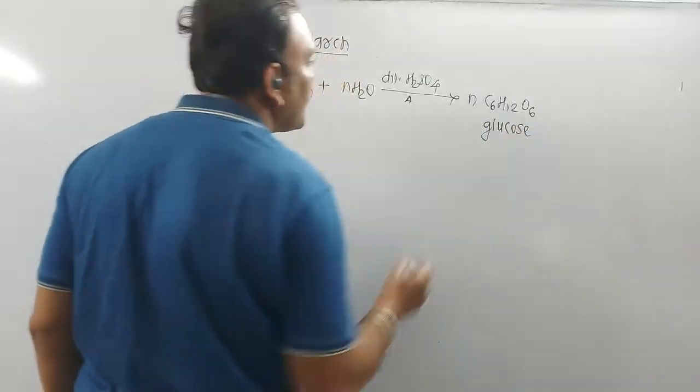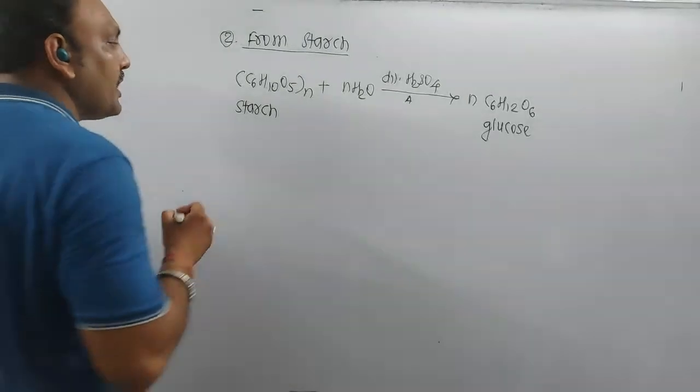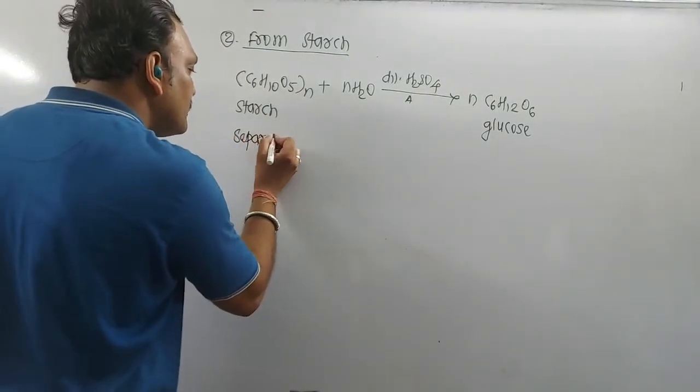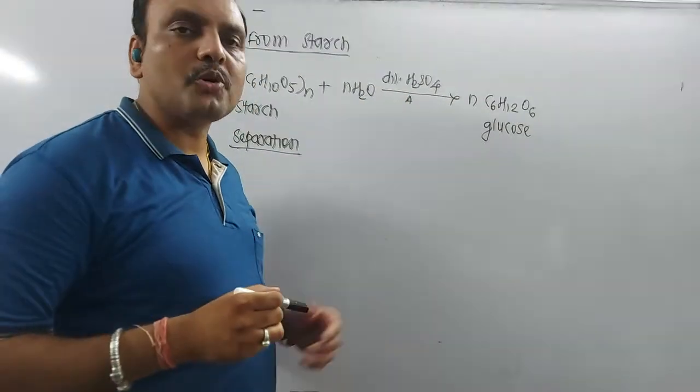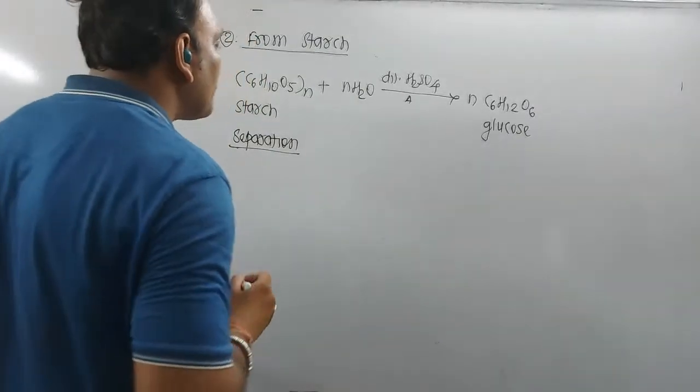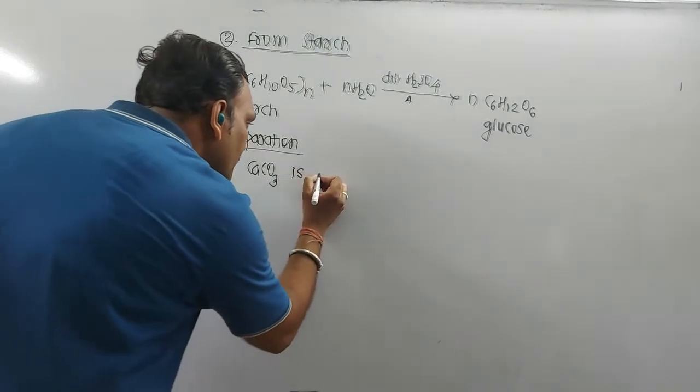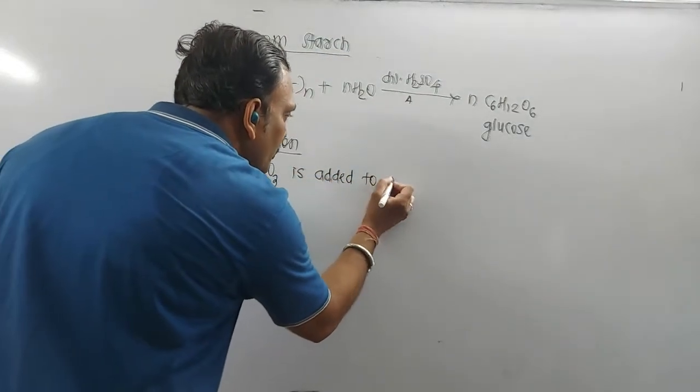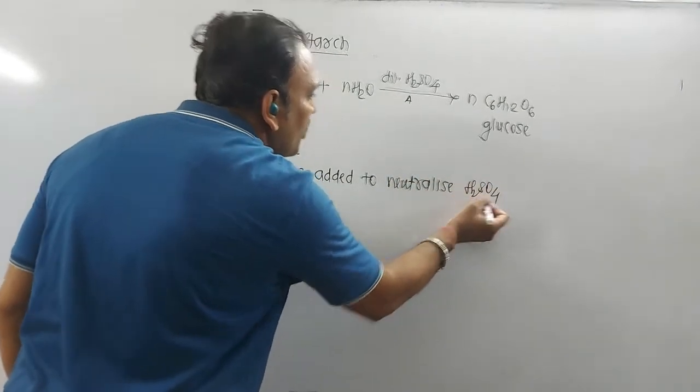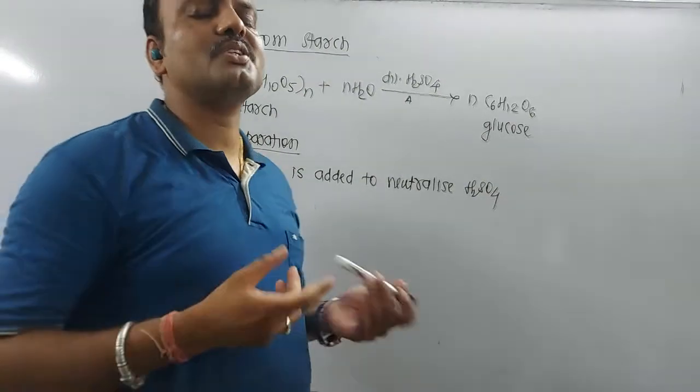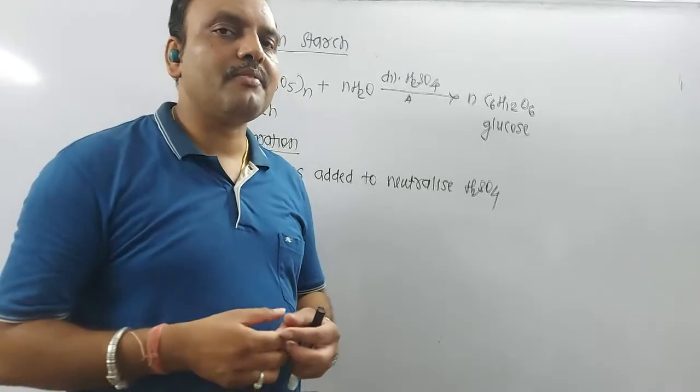But as far as separation is concerned, now remember, in this very important thing, H2SO4 is there along with the glucose so produced. So in order to neutralize H2SO4, calcium carbonate is added. So CaCO3 is added to neutralize H2SO4 if you are using H2SO4 to hydrolyze the starch. Now upon neutralization, calcium sulfate crystals are formed.